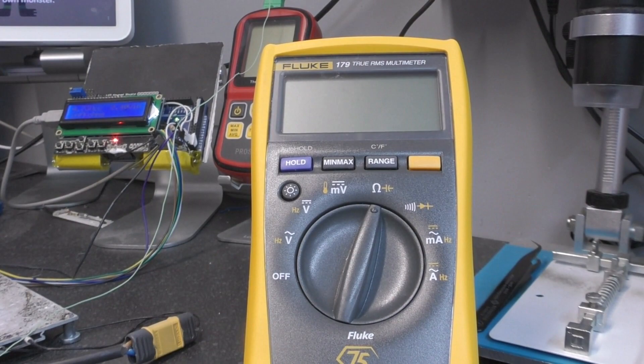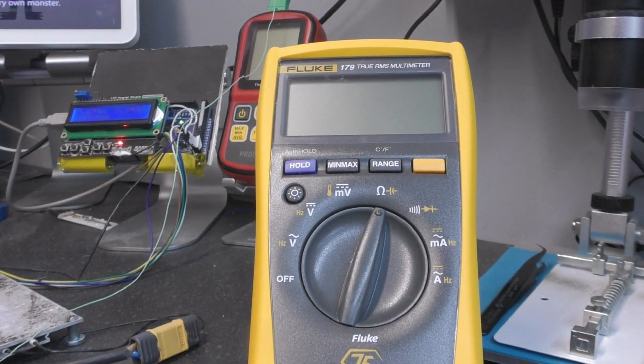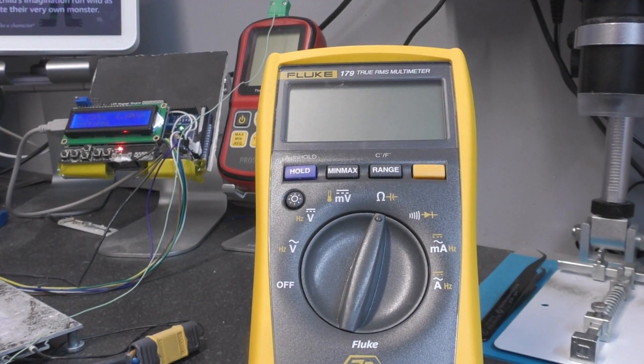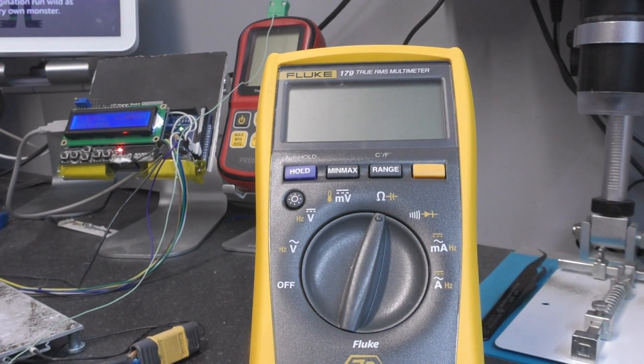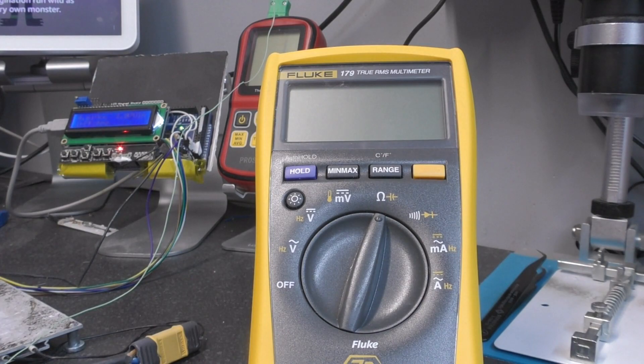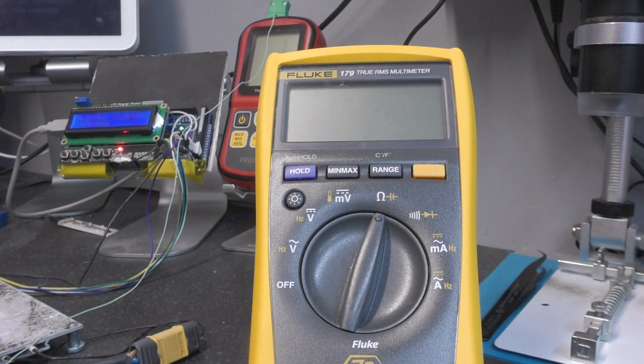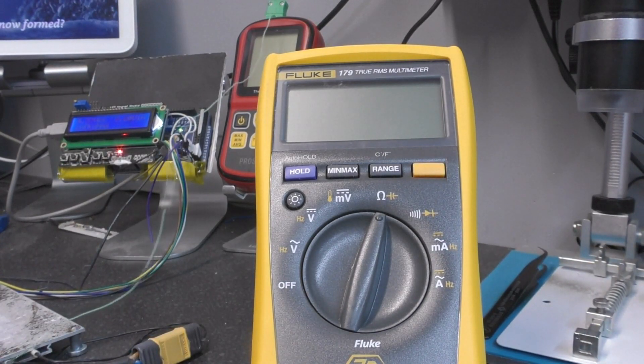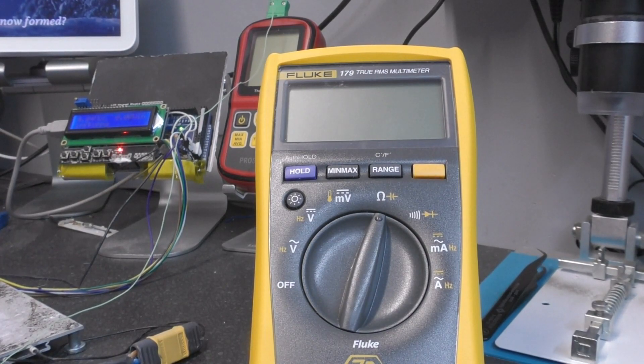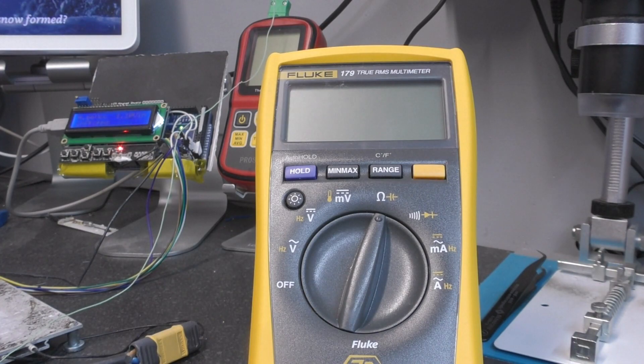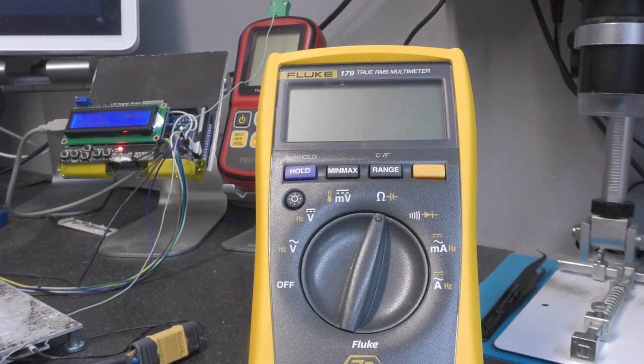I'm just going to add this clip onto the end of the unboxing of this Fluke 179 that I did a week or so ago. I didn't upload it because I pretty much ranted about the state of the test leads that it came with. This is a 450-500 quid meter and the cables that it came with were absolutely shocking.